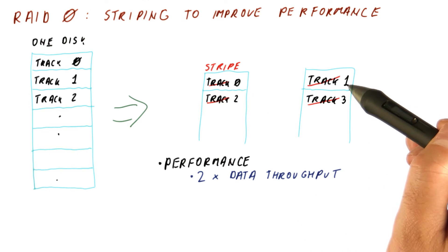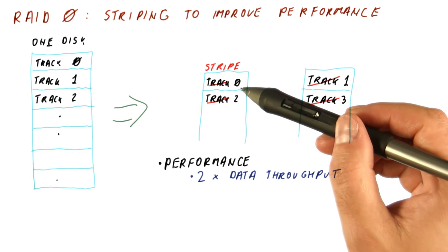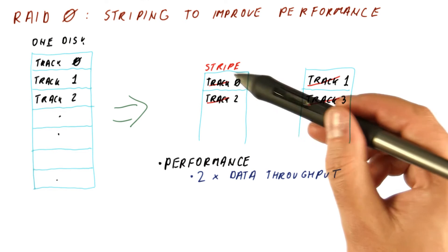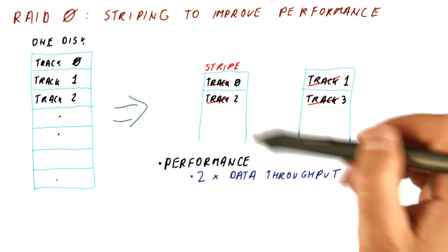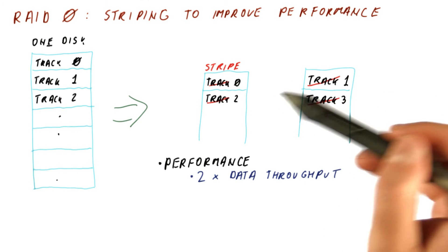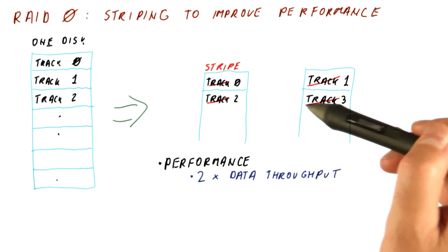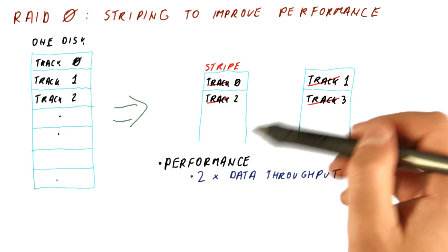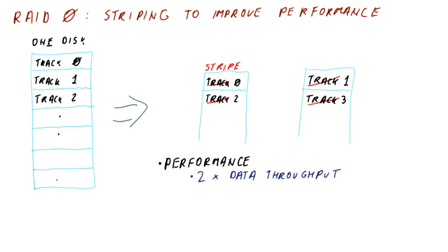Assuming that both disks are actually transferring the data. You can be unlucky and all the data you want is on the stripes that are placed on this disk, in which case you're going to get only the data throughput of a single disk. But on average, we tend to get almost twice the throughput of a single disk by splitting the data across two disks like this.